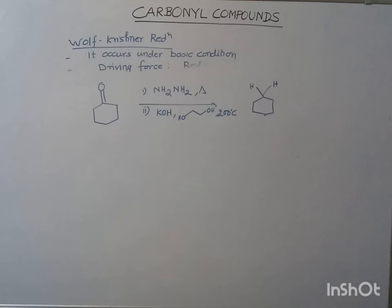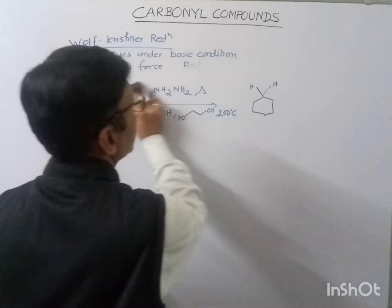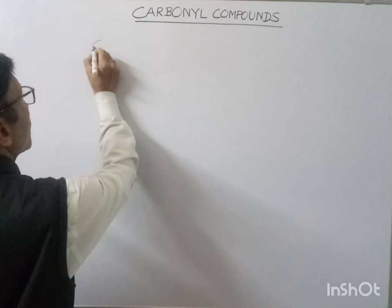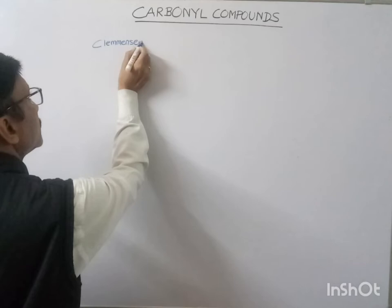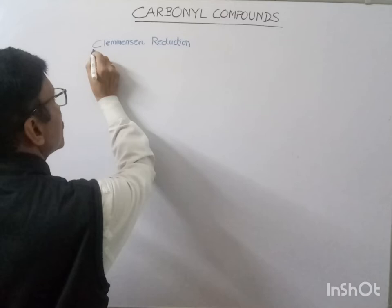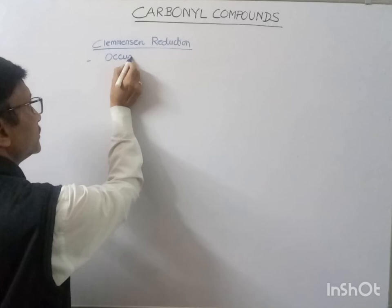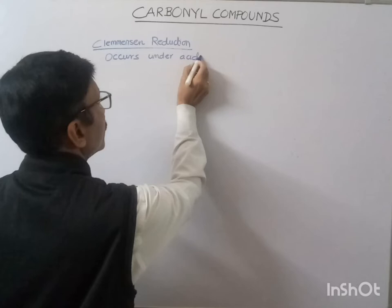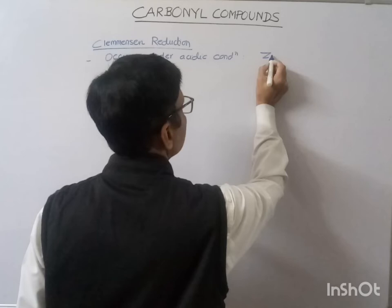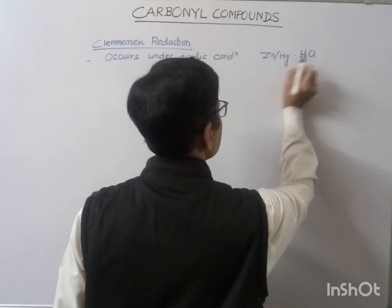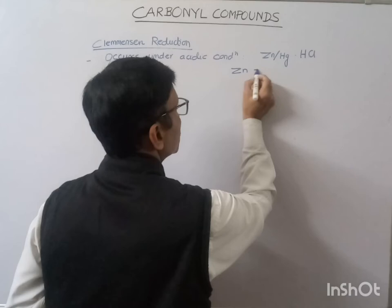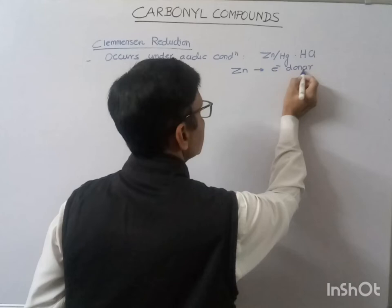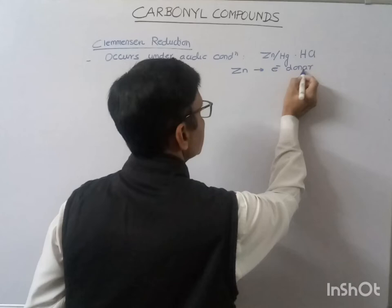The next reaction to reduce a carbonyl compound is the Clemmensen reduction. This reaction occurs under acidic conditions, where zinc amalgam is used in HCl. Here, zinc is the electron donor, whereas HCl provides the protons — zinc amalgam provides electrons and HCl provides H.